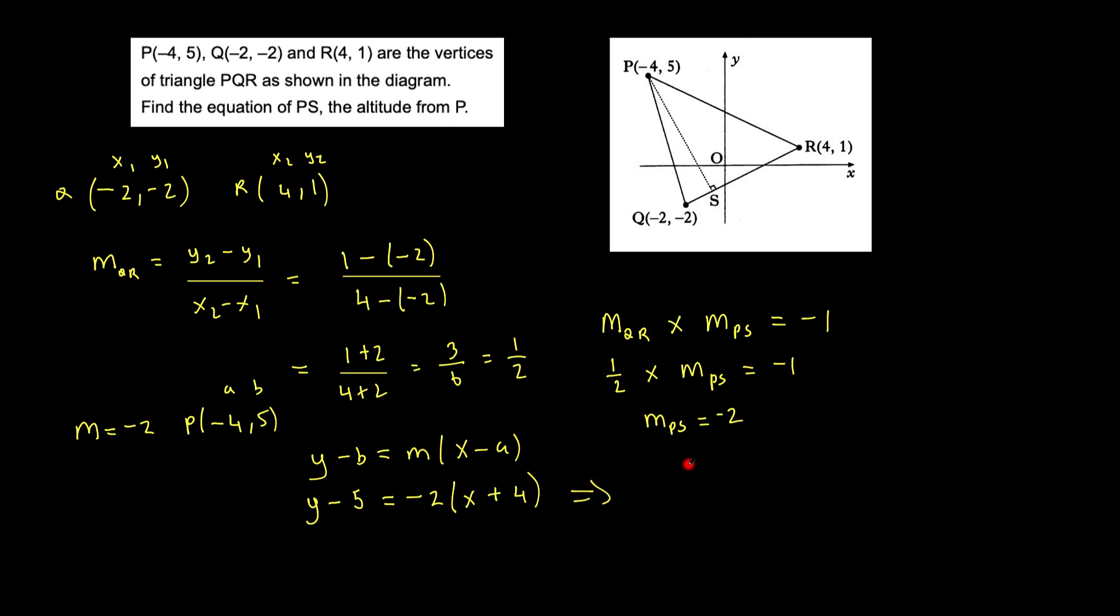Then that would give me y minus 5 equals minus 2x minus 8. And then tidying this up, bringing the 5 to this side, of course 5 will become positive, so that would be y equals minus 2x minus 3. And that would be my final answer.